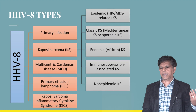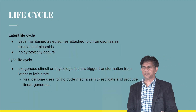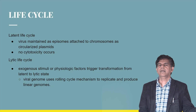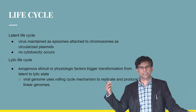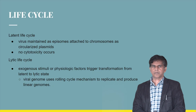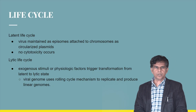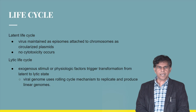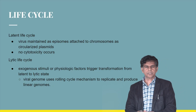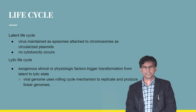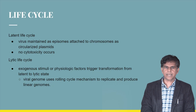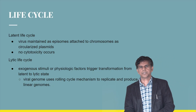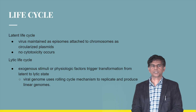Regarding the life cycle — just like all herpesviruses — there is a latent phase where the virus hides, and then it appears at a different time period. It is typically attached to a chromosome in a circularized plasmid. In the lytic cycle, exogenous stimuli or physiological factors can trigger transformation from latent to lytic. The viral genome uses a rolling circle mechanism to replicate and produce a linear genome.